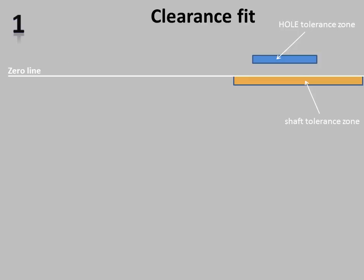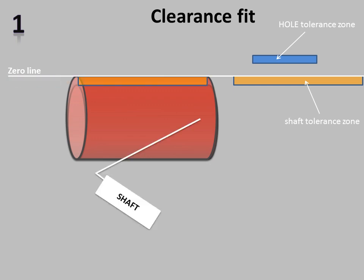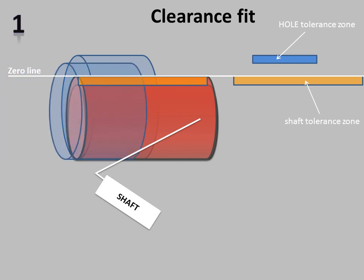On screen you are watching an example of clearance fit, where the tolerance zone of hole and tolerance zone of shaft is shown with respect to the zero line. In clearance fit, the upper limit of shaft must be less than the lower limit of hole. This is the upper limit of shaft, lower limit of shaft, and tolerance zone of shaft. Similarly, upper limit of hole, lower limit of hole, and tolerance zone of hole.